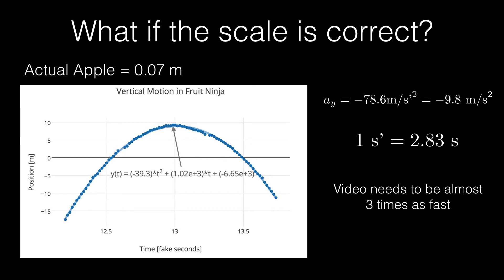I've rescaled the video such that one apple is about 7 centimeters wide instead of 75. And I get an acceleration of 78.6 meters per second squared. But here I'm calling these fake seconds. It's not the real time. I can do the same thing, and I can solve for the real time. And I get one fake second is 2.83 seconds. So the game's in slow motion, really.